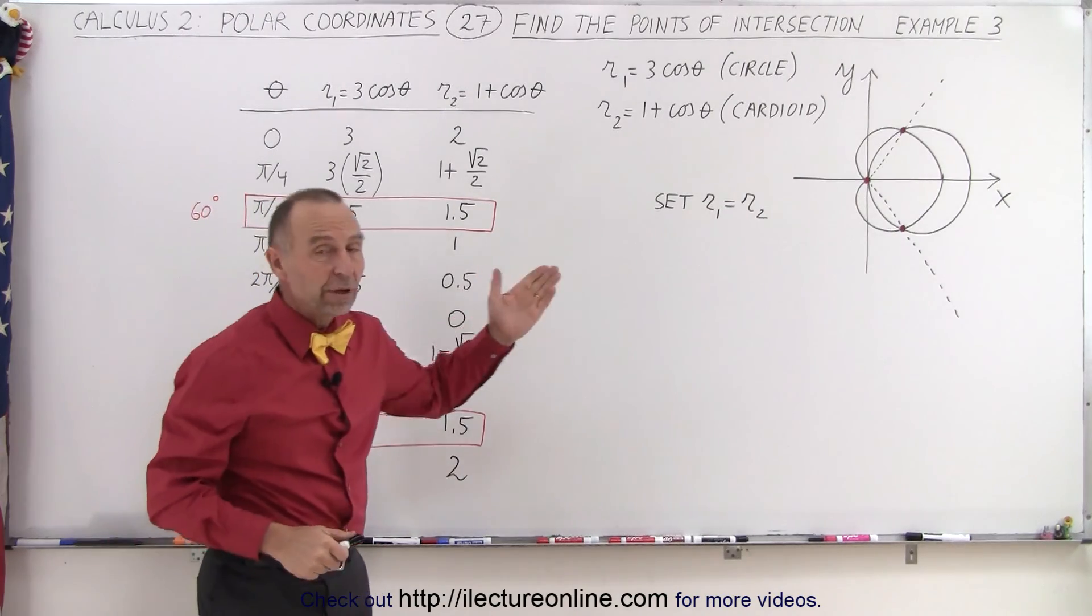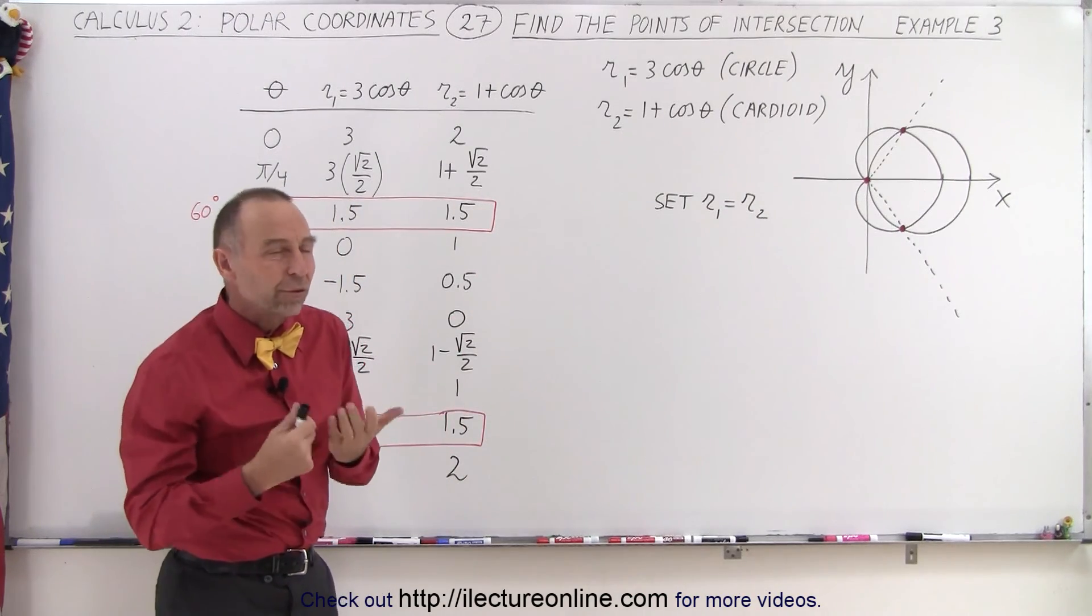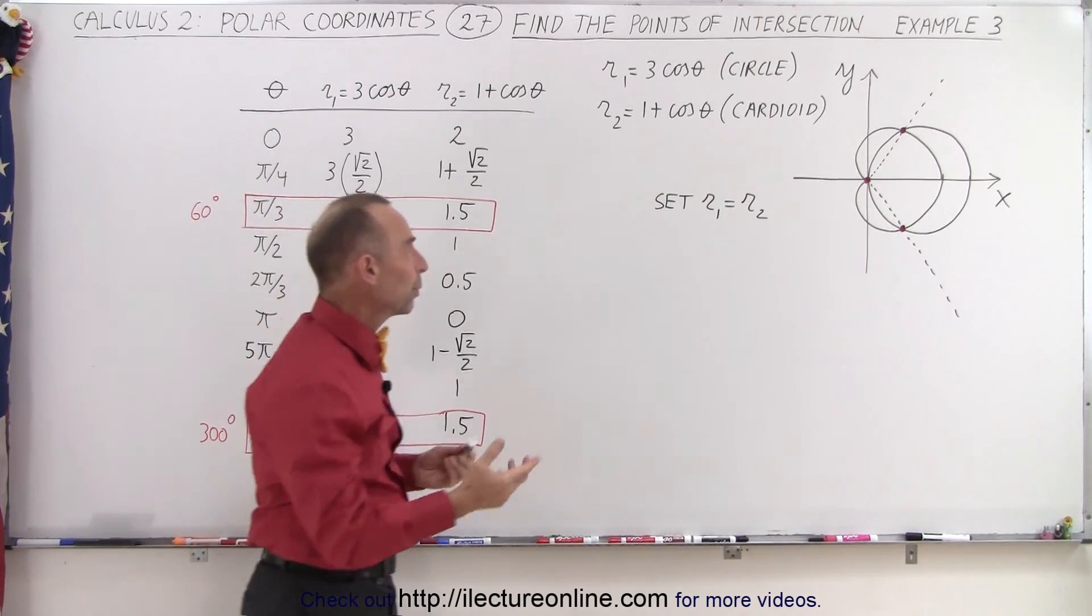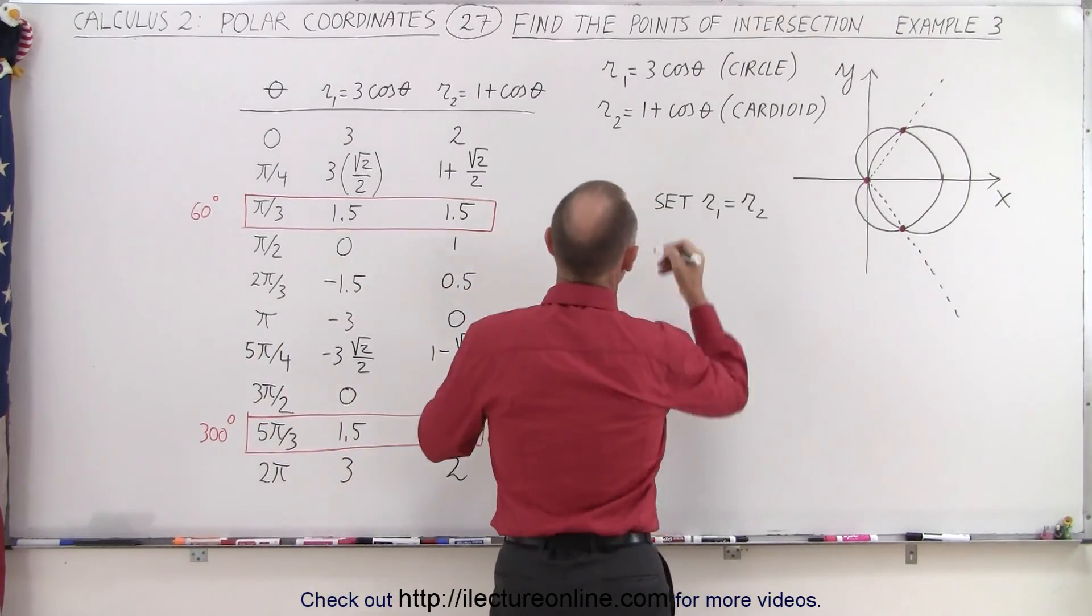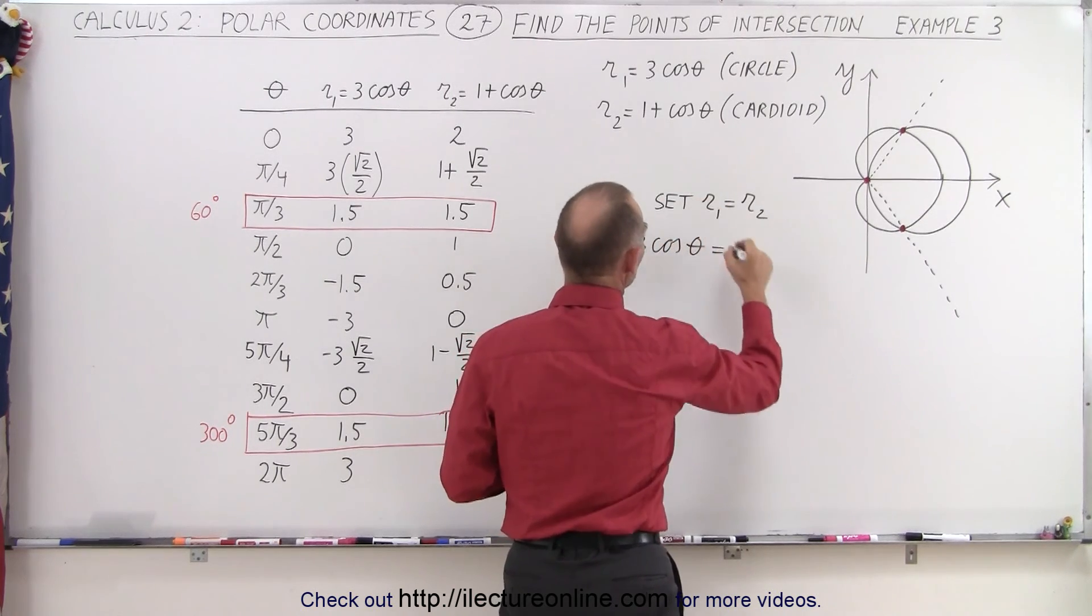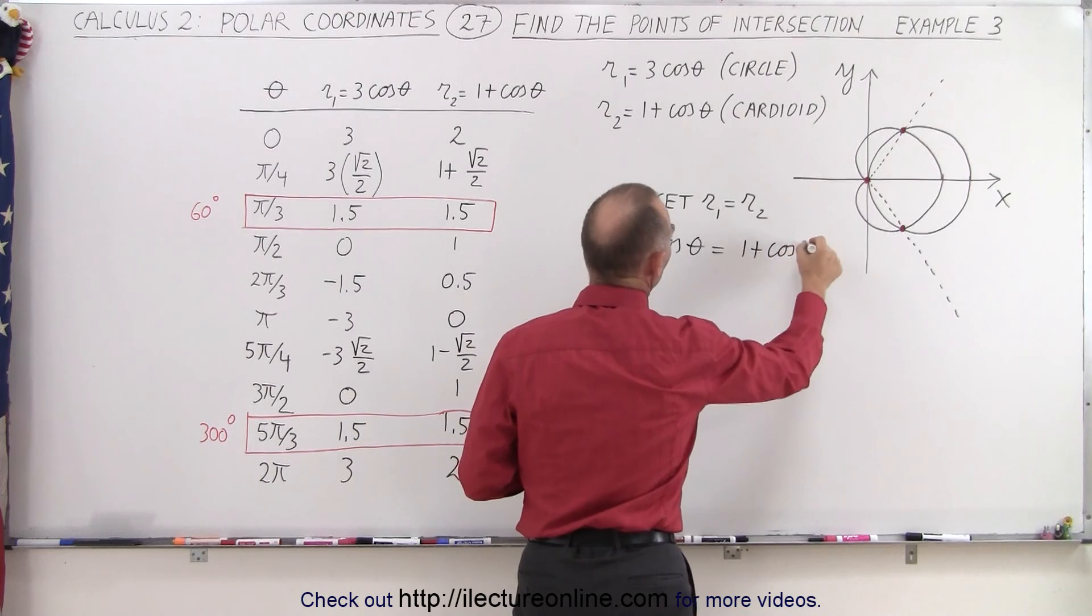Secondly, we're going to set the two equations equal to each other to see which of those three points of intersection we can find using the trigonometric approach. When we do that, we get the following. We set three times the cosine of theta equal to one plus the cosine of theta.